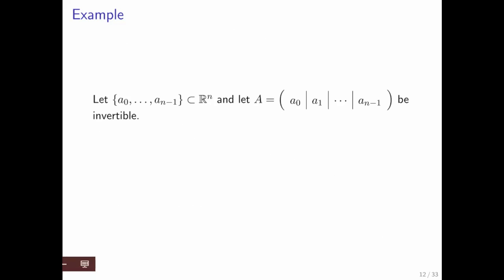Here's another example. What if we have n vectors in R^n, and when we make those into the columns of matrix A, that matrix is invertible? Those vectors then form a basis for R^n. Why is that?